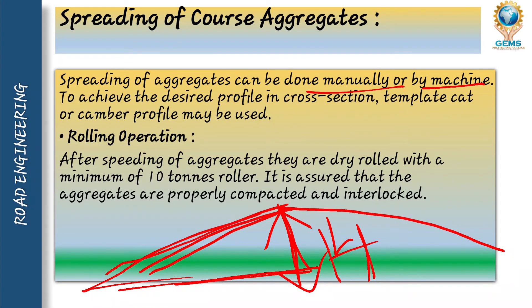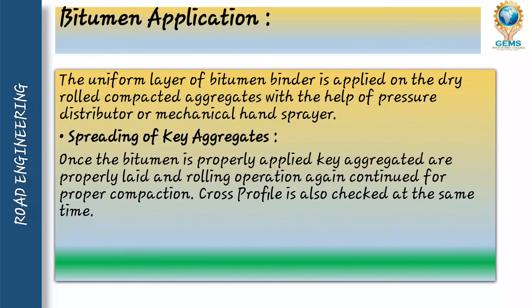Third step is rolling operation. After spreading of aggregate, they are dry-rolled with a maximum tonnage of 10 tons roller, so that the aggregate are properly compacted and interlocked. Using a 10-ton roller with vibration will compact and interlock properly. There will be no voids and the material will interlock very tightly, acting as waterproofing. Next is bituminous application: a uniform layer of bituminous binder is applied on the dry roller-compacted aggregate with the help of a pressure distributor or mechanical hand sprayer.